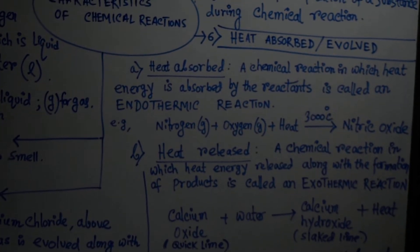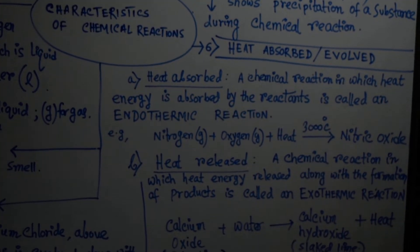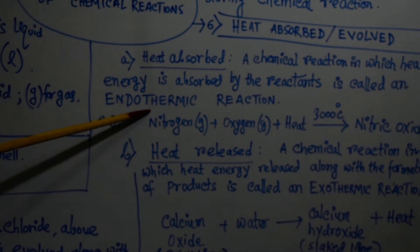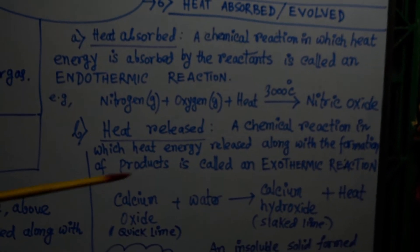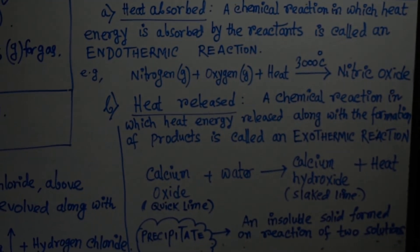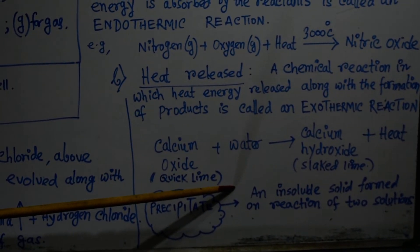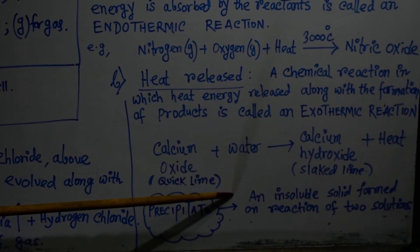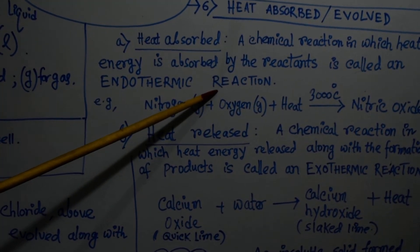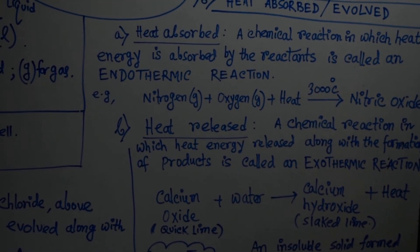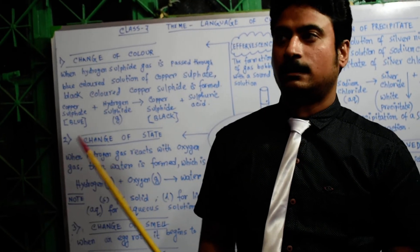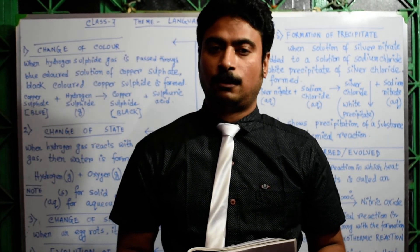Under the heading of heat absorbed or evolved, two new terms were introduced: endothermic reactions, in which heat energy is absorbed, causing a fall in temperature; and exothermic reactions, where heat energy is evolved, causing a rise in temperature. We have learnt the characteristics of chemical reactions.